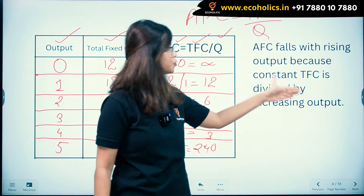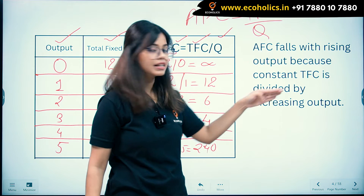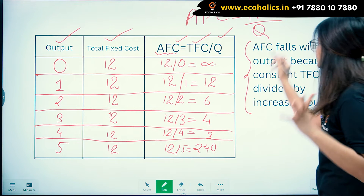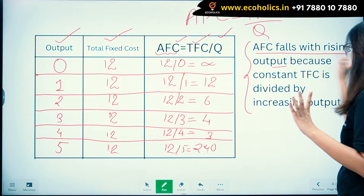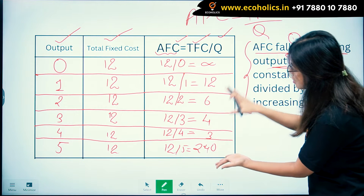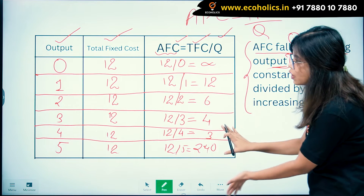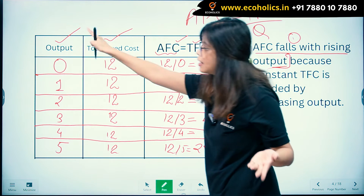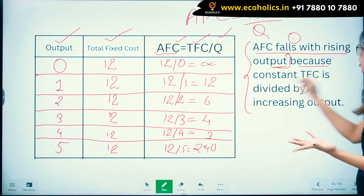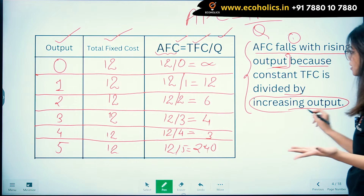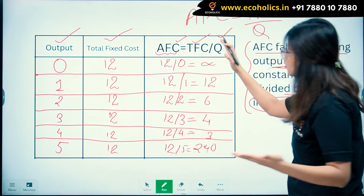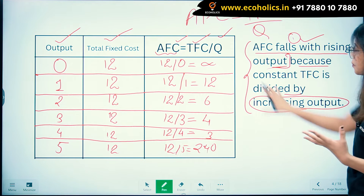AFC falls with rising output because constant TFC is divided by increasing output. TFC is constant at 12, 12, 12, 12, 12 — but output is increasing. That is why AFC is falling: from infinity, 12, 6, 4, 3, down to 2.40. This is the meaning and interpretation of the AFC schedule.